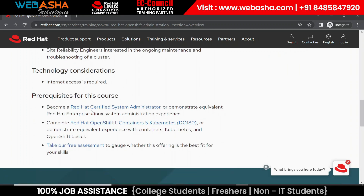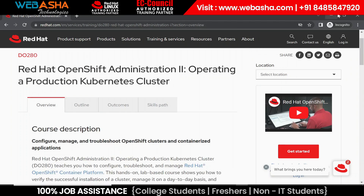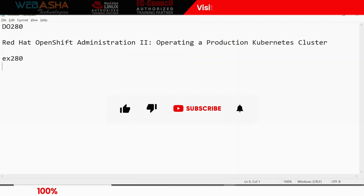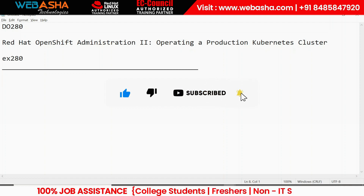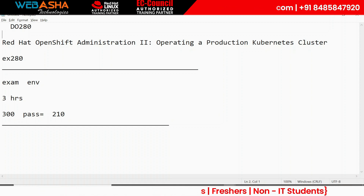The prerequisites for this course are a basic understanding of how to operate Linux-based machines and some knowledge of Kubernetes. Regarding the exam: all Red Hat examinations are practical-based. The total exam time is three hours, the total marks are 300, and you need to achieve a passing score to earn your certificate. We will also discuss which topics are most important for the exam and how to clear the certification.